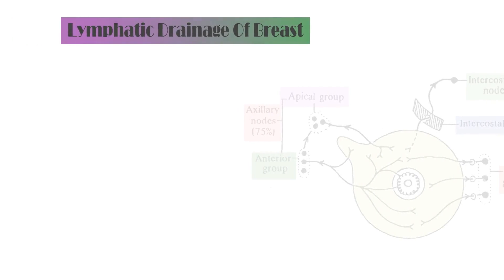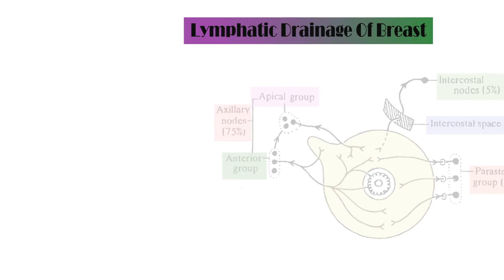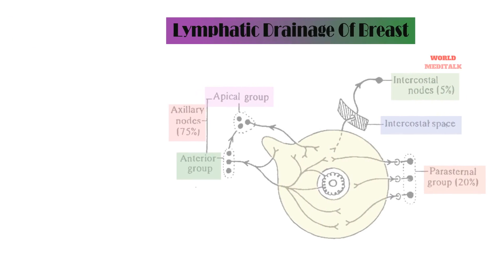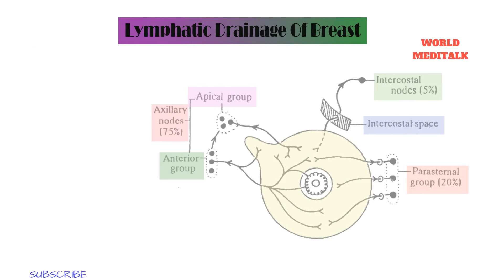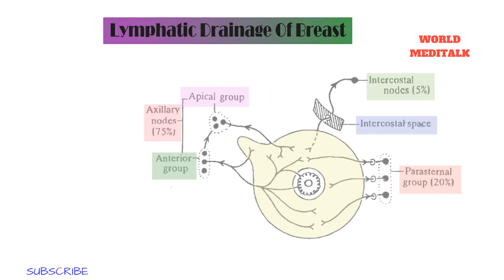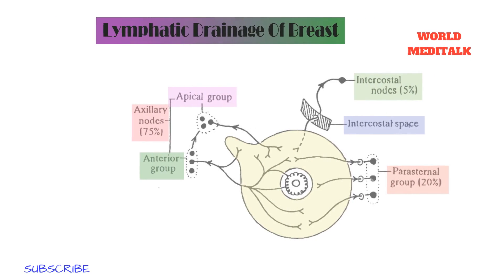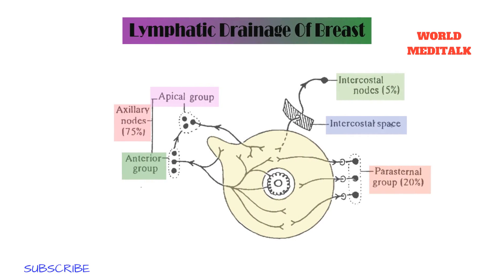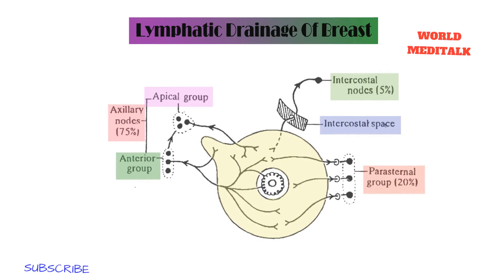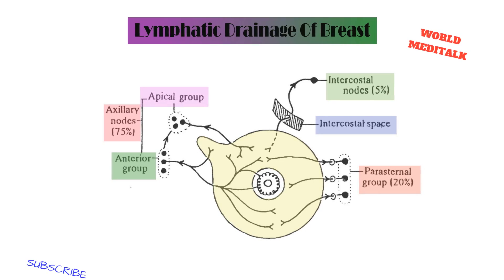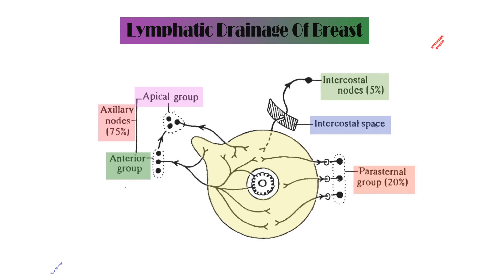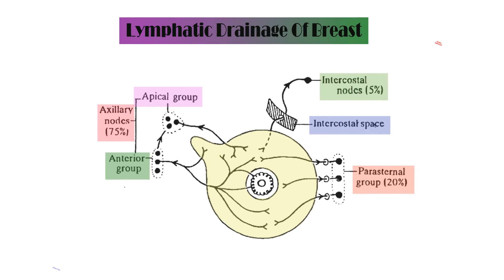The superficial lymphatics drain the skin over the breast except the nipple and areola. The lymphatics pass radially to the surrounding lymph nodes — axillary, internal mammary, and supraclavicular. The deep lymphatics drain the parenchyma of the breast and the nipple and areola. 75% of the lymph from the breast drains into the axillary lymph nodes, 20% drains into the internal mammary lymph nodes, and 5% to the posterior intercostal lymph nodes.